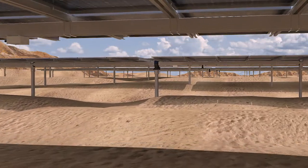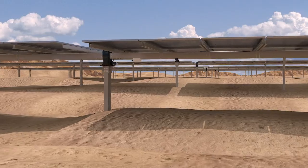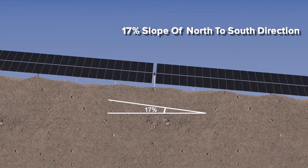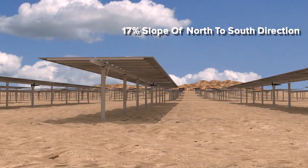PowerFit solution has an unlimited slope of east to west direction and a maximum of 17 degree slope of north to south direction, which is very flexible for hilly areas.